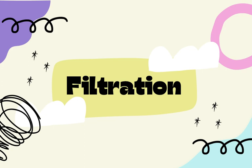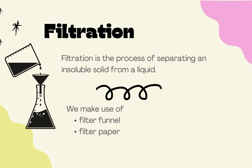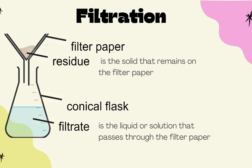What is filtration used for? Filtration is used when you want to separate insoluble solids from liquid. We make use of the filter funnel and filter paper in this process. The diagram shows a filtration setup whereby you have the residue — the solid that remains on the filter paper after filtration — and the filtrate, which is the solution or liquid that passes through the filter paper.